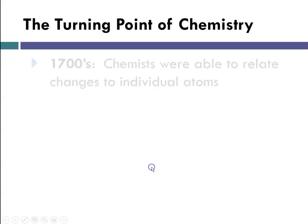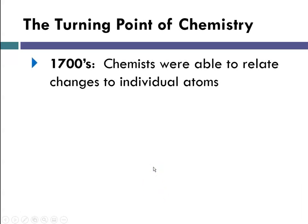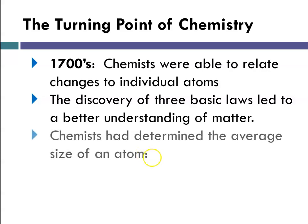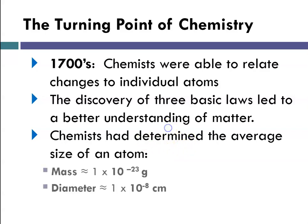The turning point of chemistry came in the late 1700s. At that point, chemists were able to relate changes that they observed to individual atoms, and there was a discovery of three basic laws that led to a better understanding of matter and theories describing atoms. Chemists had determined that the average mass of an atom was about 10 to the minus 23 grams and that the diameter was about 10 to the minus 8 centimeters.